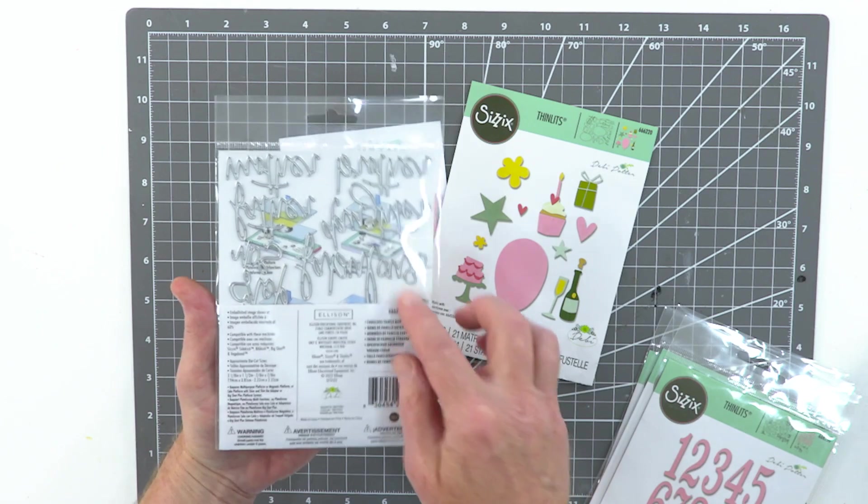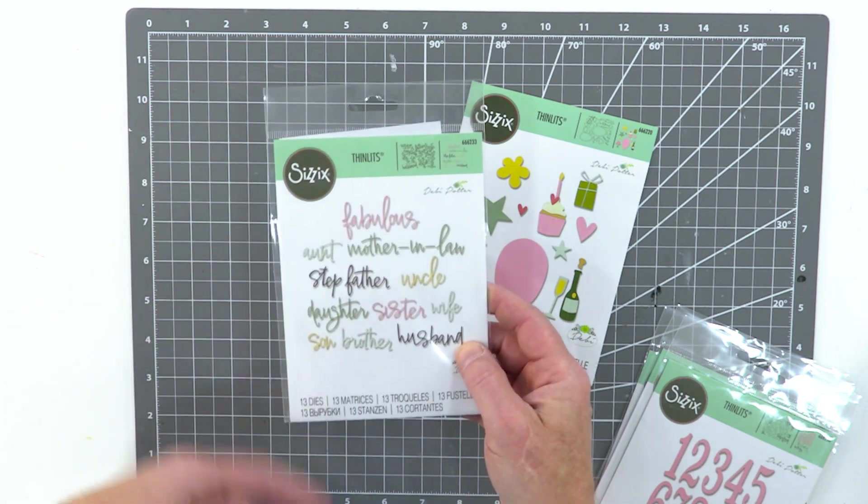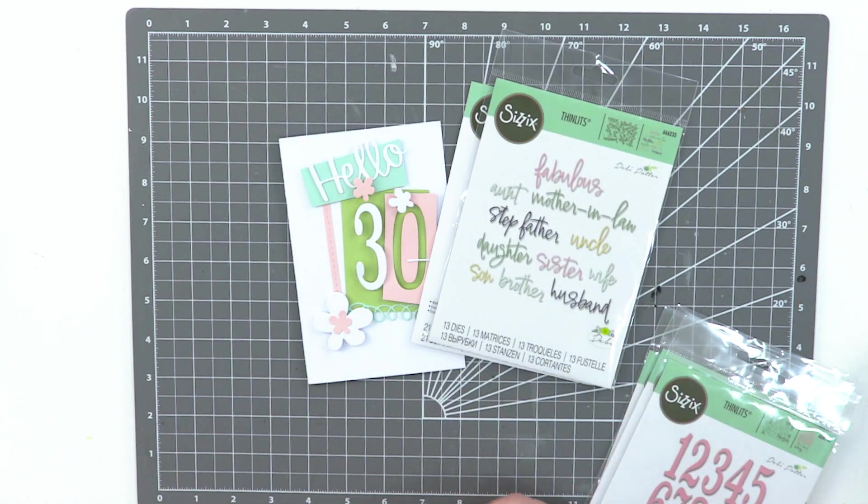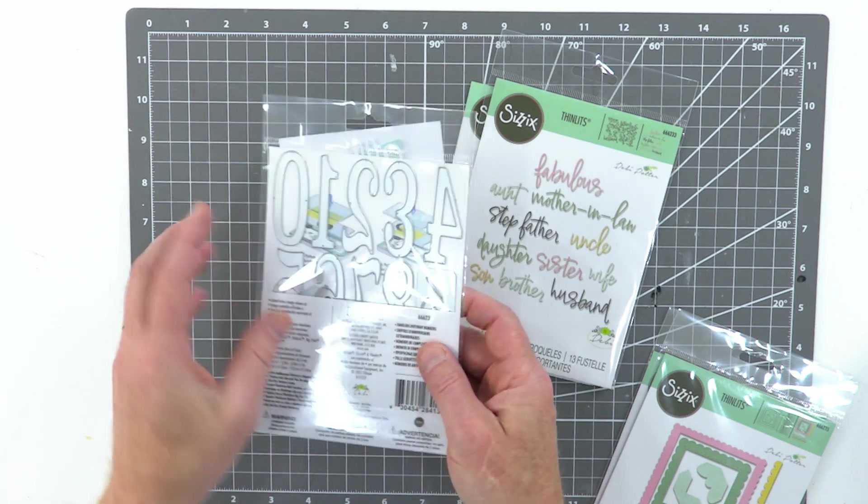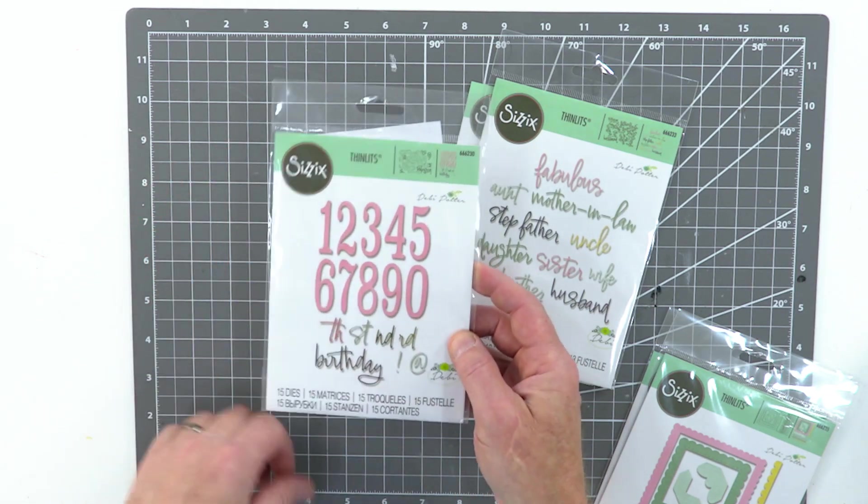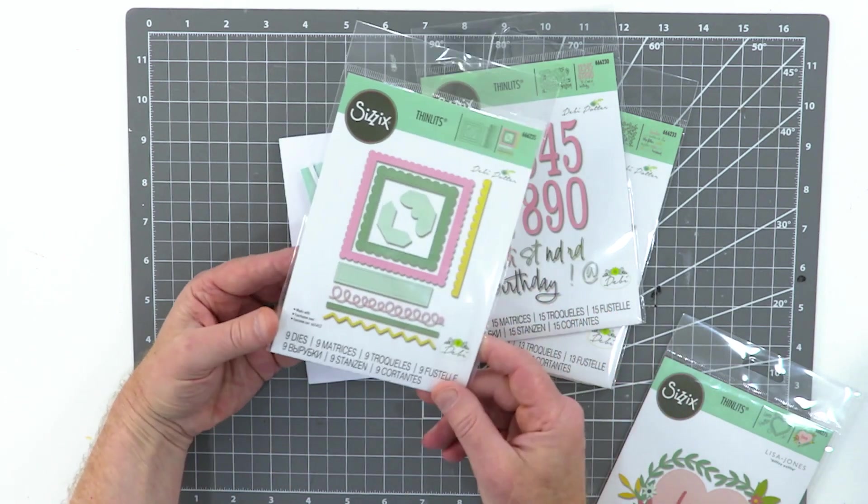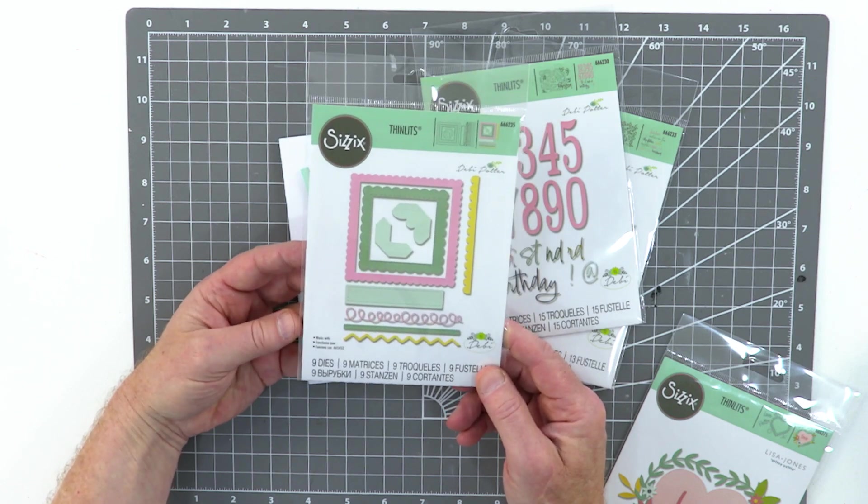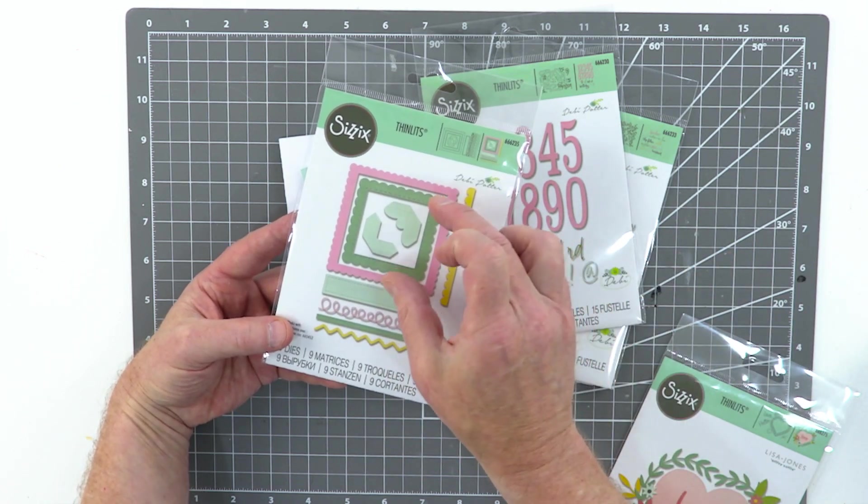Then next up we've got the fabulous family names, so again all year round something for everybody. Fabulous birthday numbers, so elegant. I love these and they're perfect for papercraft makes and perfect to put on the front of a card. Then this one is gorgeous. This one is actually called fabulous frames and borders.